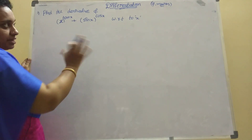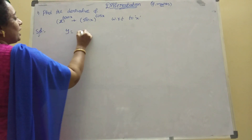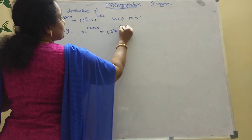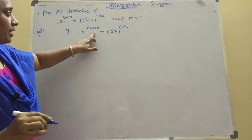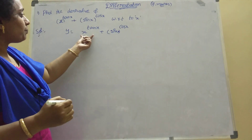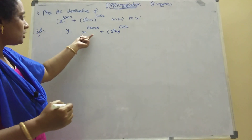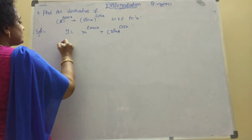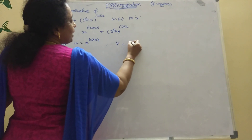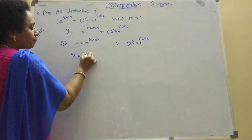Here powers are there, and 2 terms are there. That is why you take another variable. Let y equal to x power tan x plus sin x power cos x. Now, since there are separate power terms, you take this first function as u and this second function as v. Let u equal to x power tan x, and v equal to sin x power cos x. So y equal to u plus v.